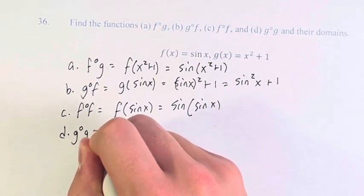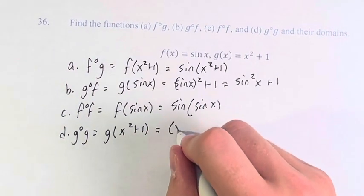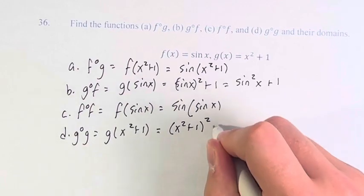And finally, g of g is g of x squared plus 1. So this is x squared plus 1 squared plus 1.